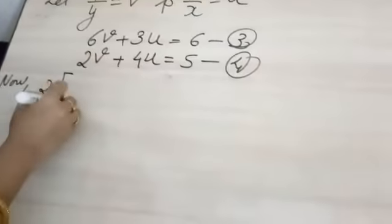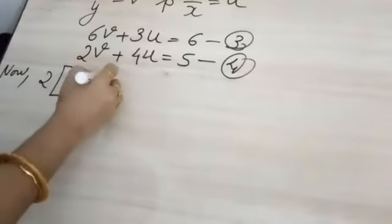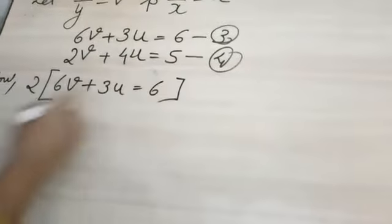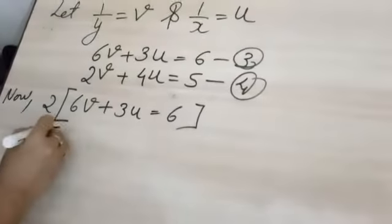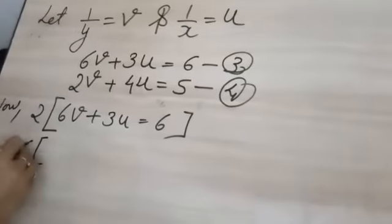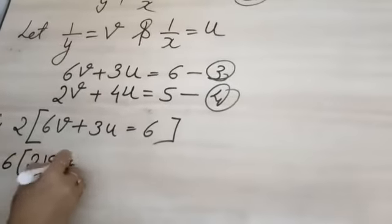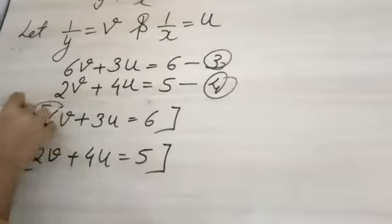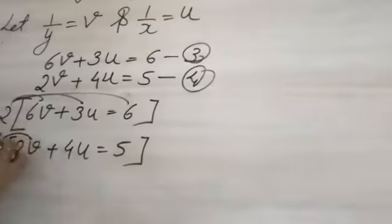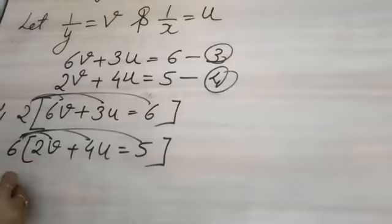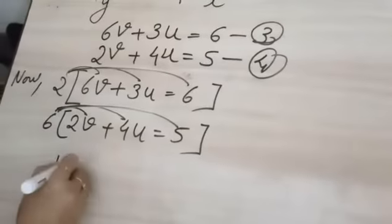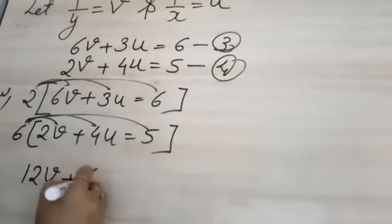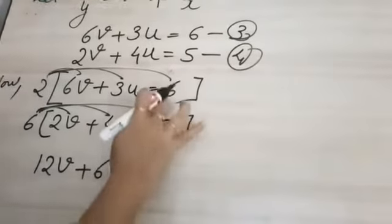Now 2 times the bracket 6v plus 3u is equal to 6, and we will write 6 times the bracket 2v plus 4u is equal to 5.